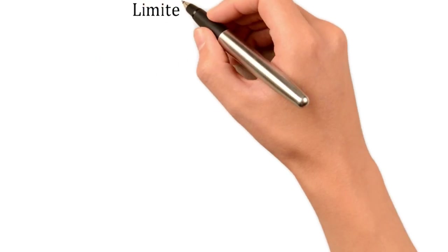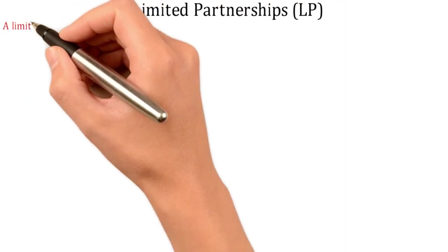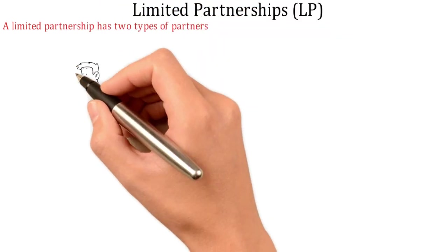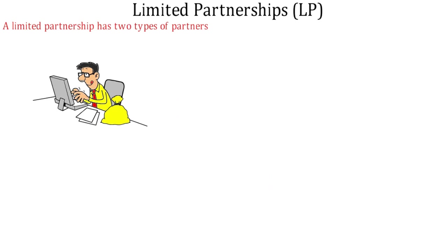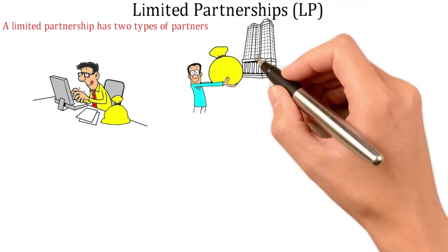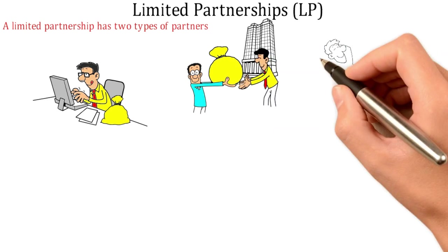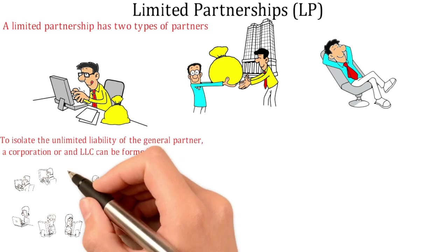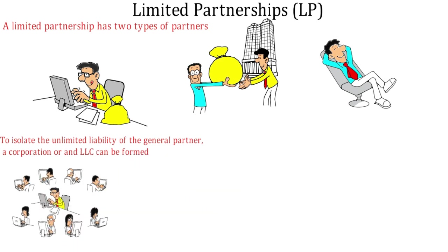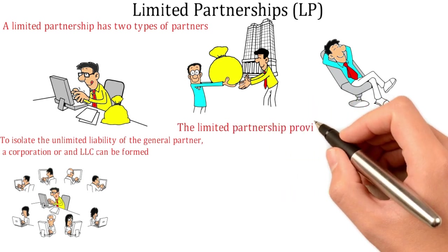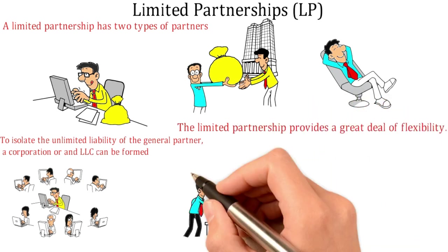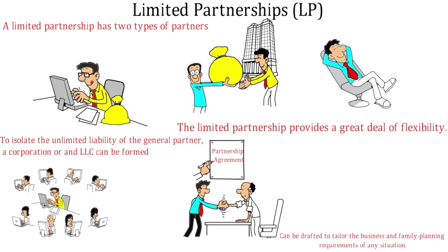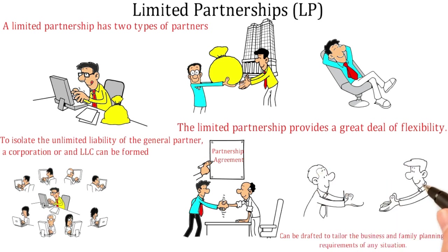A limited partnership has two types of partners: a general partner who manages the business and is personally liable, and limited partners whose liability is limited to their contribution of capital but who may not be actively involved in the business. To isolate the unlimited liability of the general partner, a corporation or an LLC can be formed to serve as the general partner of a limited partnership, thus making it a good entity. The LP provides a great deal of flexibility through a written partnership agreement.